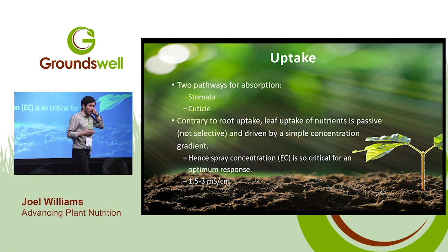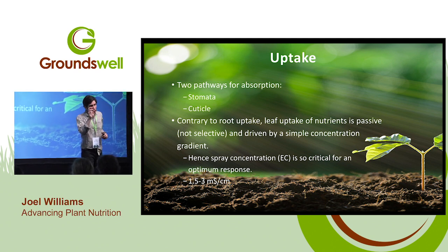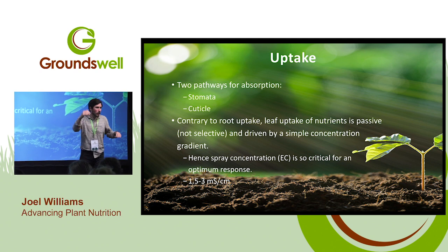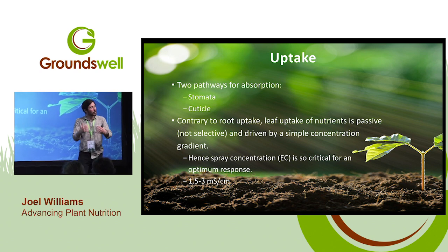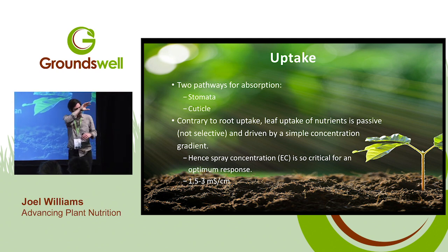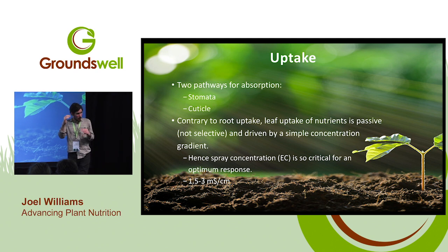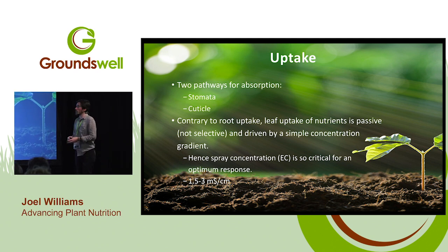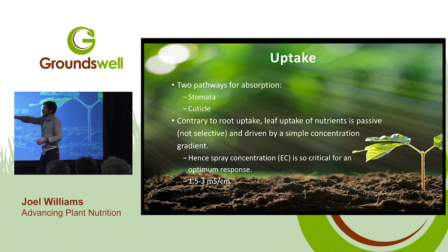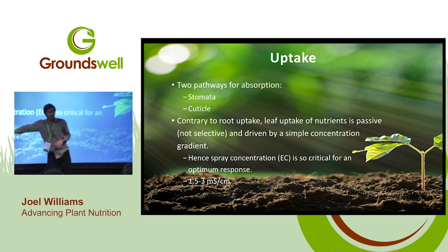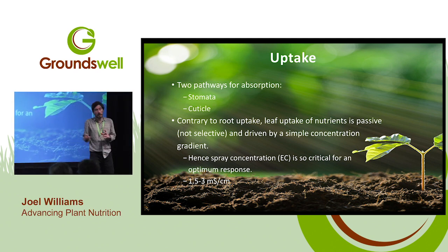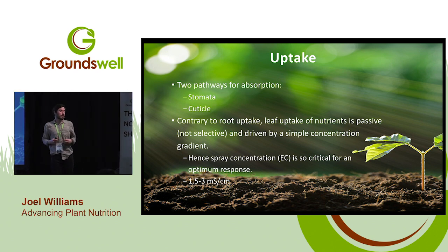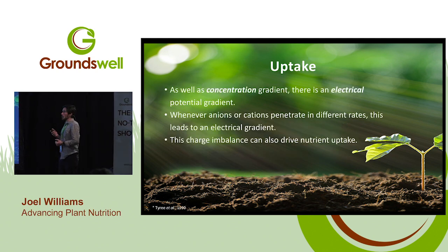This also highlights the importance of getting the spray formulation concentration correct. If your foliar spray is too weak and too dilute, you'll have a lower concentration gradient, so uptake will be slower and you won't get as good a response. Getting the right concentration is critical to creating a bigger gradient, quicker uptake, and quicker utilisation — it totally influences the speed of that response. That comes down to the EC — the concentration of our nutrient mix. Around 1.5 to 3 millisiemens per centimetre is considered a good nutrient concentration of that foliar mix to get good absorption and uptake.